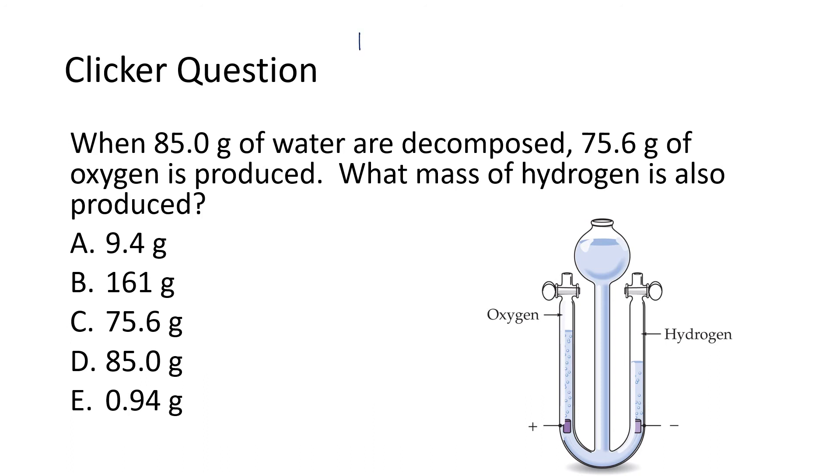So I'm going to call those the reactants. The reactants are the things that we start with, and we have 85 grams, and that's all we have. We just have water. There's nothing else initially. But then they're going to be decomposed to give us hydrogen and oxygen. So over here on the product side, we're going to have both hydrogen and oxygen, and we know that we have 75.6 grams of oxygen, but we're looking for how much hydrogen was produced. We don't know.